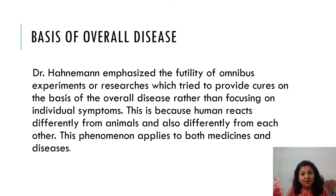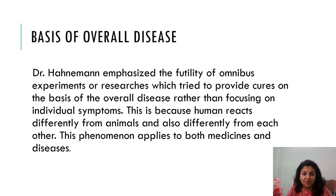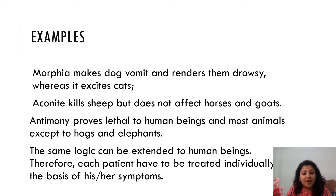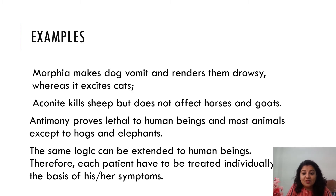So when a patient is ill and has the same symptoms from the mind to the body, the medicine is prescribed. We see the totality of symptoms, not isolated ones. For example, morphia makes dogs vomit and renders them dropsy, whereas it excites cats. Aconite kills sheep but does not affect horses and goats. Antimony proves lethal to human beings and most animals except hawks and elephants. The same logic applies to human beings — therefore each patient has to be treated individually on the basis of his or her symptoms.